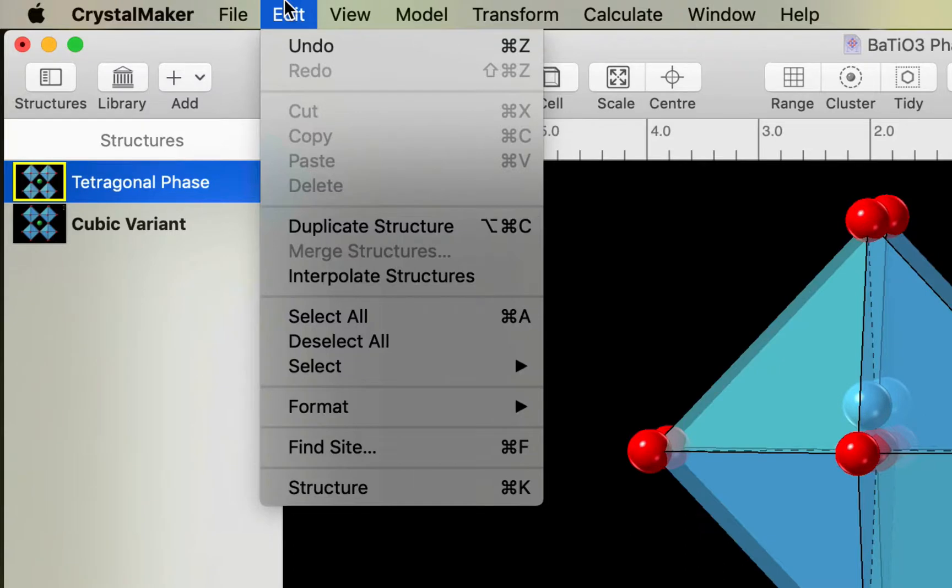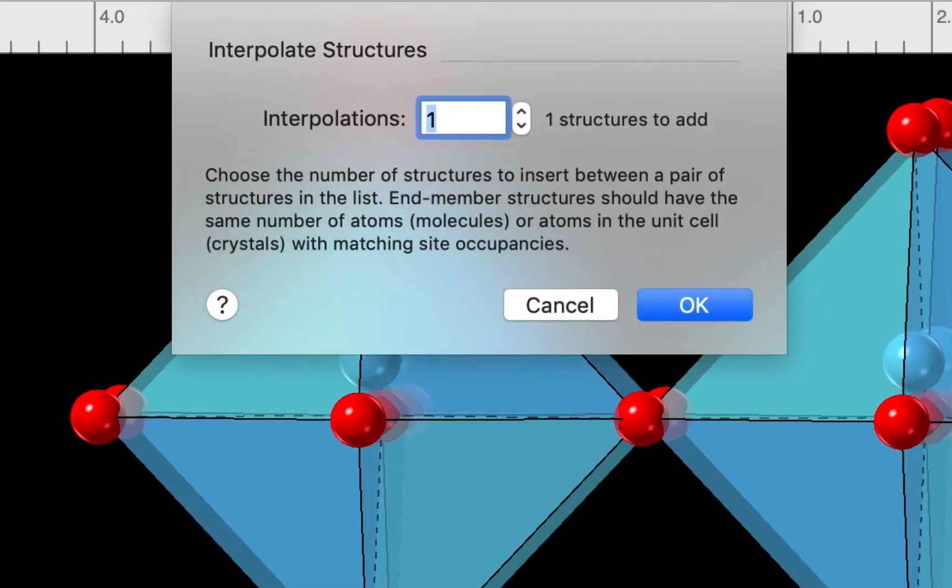So I go to the edit menu and I choose interpolate structures, and I'm prompted for the number of interpolations. So I think we'll go for nine.